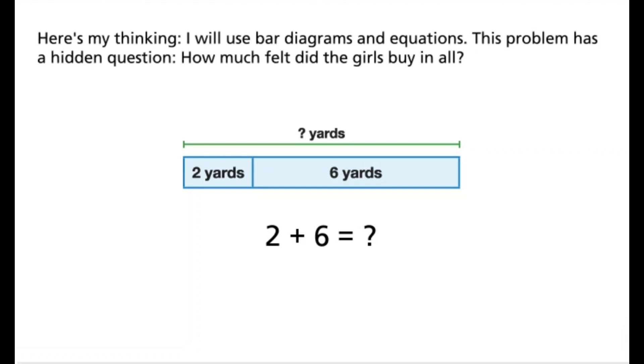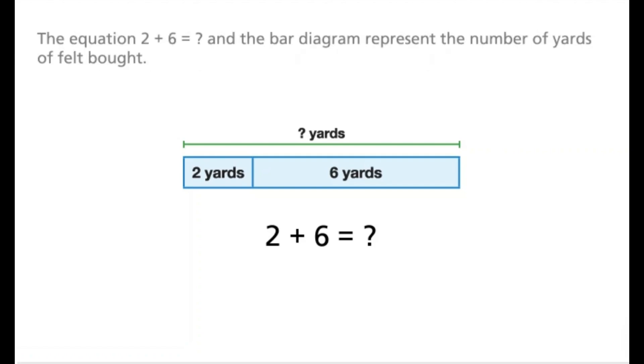Here's my thinking. I will use bar diagrams and equations. This problem has a hidden question. How much felt did the girls buy in all? The equation 2 plus 6 equals what? And the bar diagram represent the number of yards of felt bought.